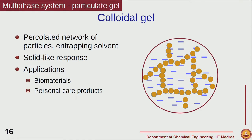Another important example of a multiphase system is a colloidal gel system. In this case, very similar to the macromolecular case, we have a chain of particles which is present and the chains are linked with each other through a network. There is a percolated network of particles containing large quantities of solvent. Therefore, this is again a solid-like material because of the network that is present.